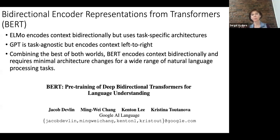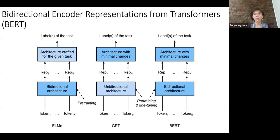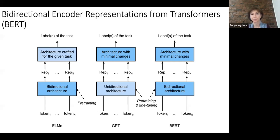This figure compares ELMo, GPT, and BERT. ELMo uses pre-training with bidirectional architecture but requires separate architecture design for each NLP task. GPT uses unidirectional architecture but requires minimal changes in architecture for each task. BERT uses both bidirectional architecture and requires minimal changes for each NLP task — combining the best of both approaches.